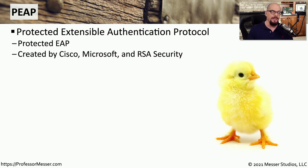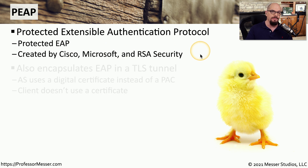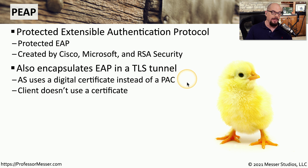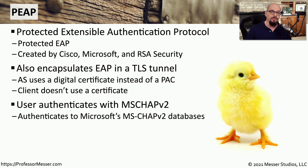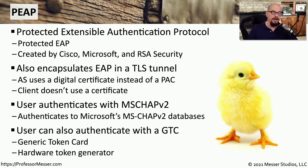Another form of an encrypted tunnel used with EAP is called PEAP, which stands for Protected Extensible Authentication Protocol. It was created by Cisco, Microsoft, and RSA Security. PEAP also uses TLS to send authentication information, but instead of being based on a shared secret with a PAC, it uses the same method as a traditional web server — a digital certificate. This digital certificate is only needed on the server; clients do not need separate digital certificates to use PEAP. If you're authenticating to a Microsoft network, you're probably combining PEAP with MS-CHAP version 2, Microsoft's Challenge Handshake Authentication Protocol, which integrates with Microsoft CHAP version 2 databases. PEAP can also be used with a Generic Token Card, or GTC, along with a hardware token generator for additional authentication.